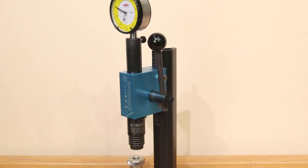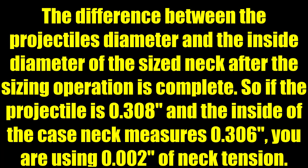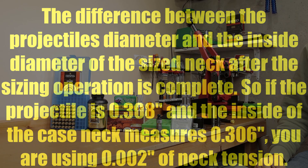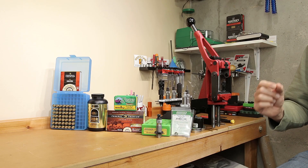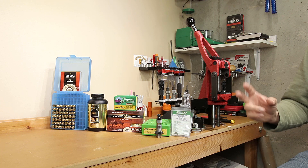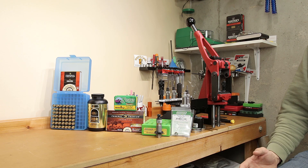I'm not sure that's exactly how I would have picked to define it, but overall it's a good start. Possibly a more common definition might be the actual amount of force required to seat a projectile into or pull out of a case. You might use something like an arbor press with a force pack to monitor this value as you seat projectiles. Yet another way I've heard of defining this term is the difference between the projectile's diameter and the inside diameter of the neck after the sizing operation is complete.